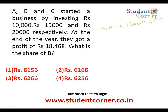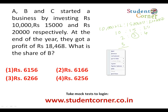Taking out the common factors — twelve and thousands — we are left with ten, fifteen, and twenty. Dividing each by five, the simplified ratio is two is to three is to four. The total parts are two plus three plus four equals nine. B is the middle person, so B's ratio is three out of nine.